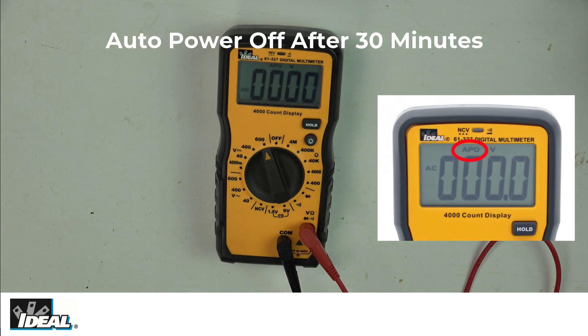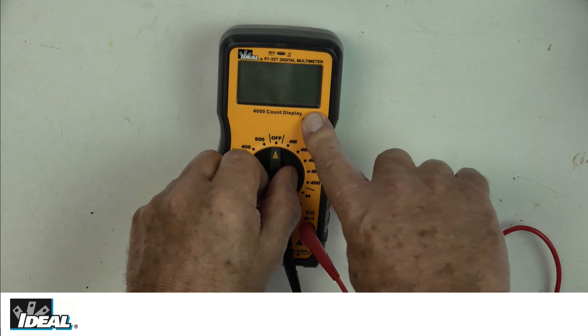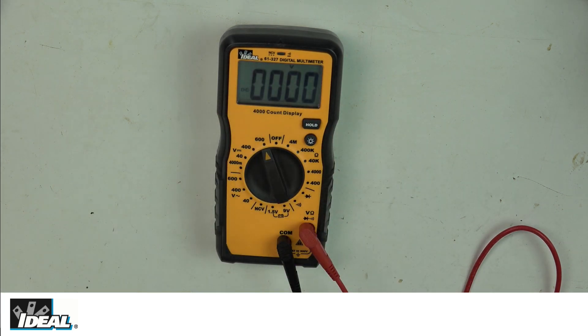In the very top of the display it says APO, which stands for Auto Power Off. The tester automatically powers itself off after 30 minutes of not being used. You can disable that by pressing and holding the hold button down, turning the tester back on, and you'll notice APO is no longer in the display. You can re-enable it by turning it off and back on.